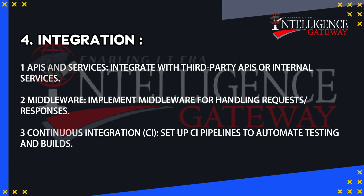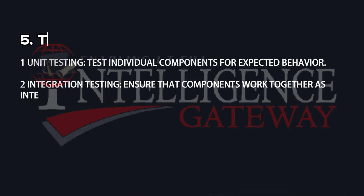The fourth step is Integration. Integrate with third-party APIs or internal services, implement middleware for handling requests and responses, and set up continuous integration (CI) pipelines to automate testing and builds.